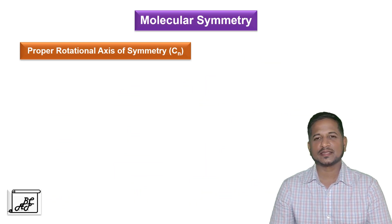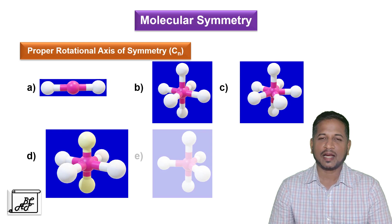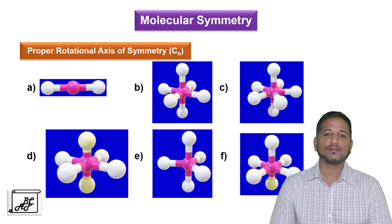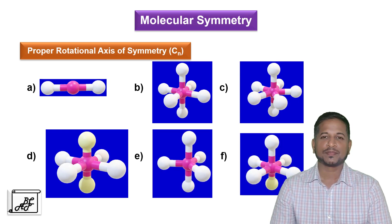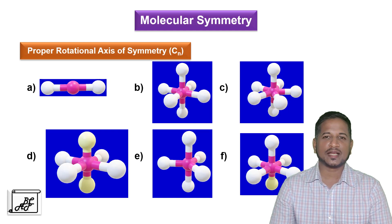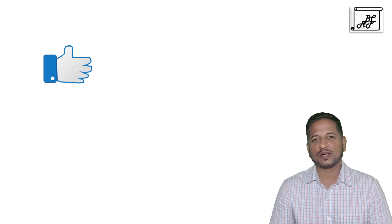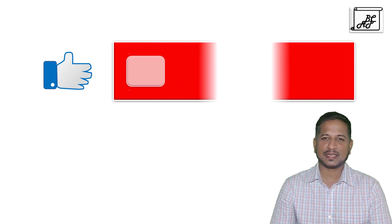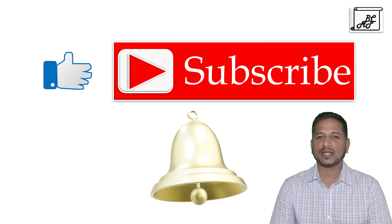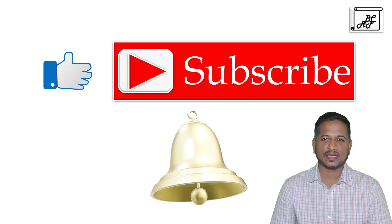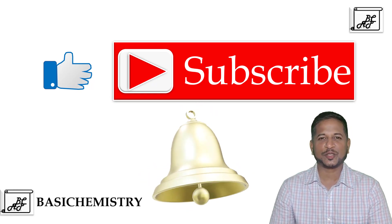Let's see some more examples. You can see six images on the screen and you have to tell me which rotational axis of symmetry is present in each example — mention your answers in the comment box. If you like this video, click like, share, and subscribe to my channel. Also press the bell icon to get notifications of my new videos. Keep watching Basic Chemistry. Thank you.